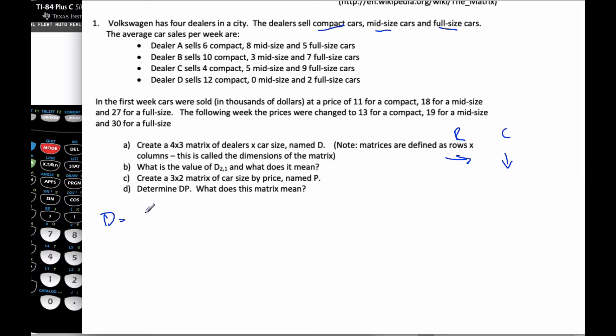So I want to have four rows: one, two, three, four, and three columns. And what I'm going to have here is this matrix 6, 8, and 5, and 10, 3, and 7. And for dealer C it will be 4, 5, 9, and 12, 0, and 2.